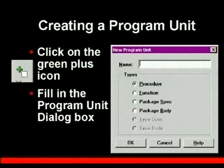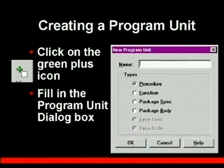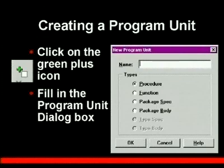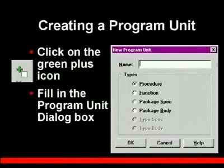When you create a program unit, you'll be in the Object Navigator on the program unit node. Click the green plus icon to create a new program unit. A program unit dialog box will appear where you assign a name and choose the type: procedure, function, package specification, or package body. Once you finish, it will launch the PL-SQL editor, which you're used to by now.